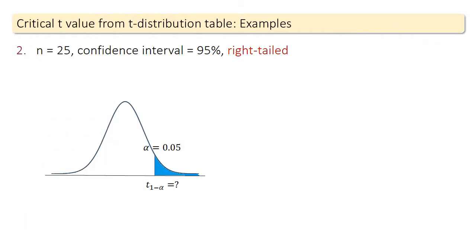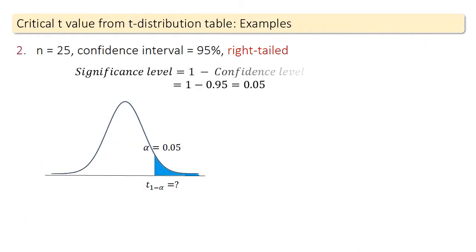In this example, the distribution is right-tailed, the significance level is 0.05, and the degrees of freedom is 24.